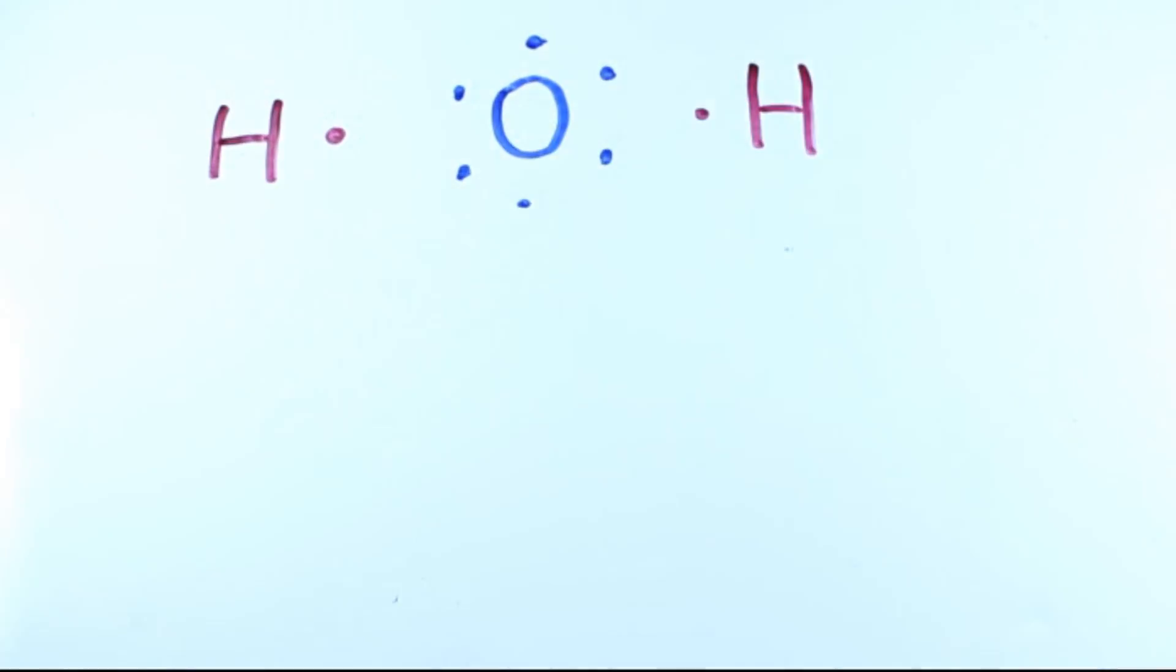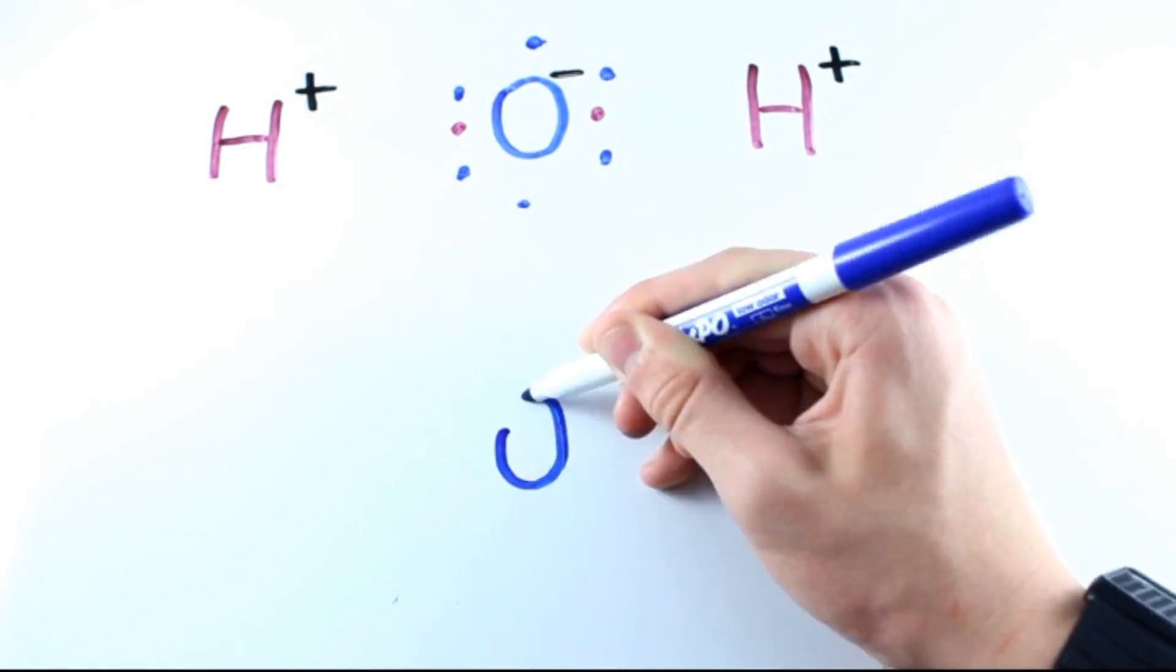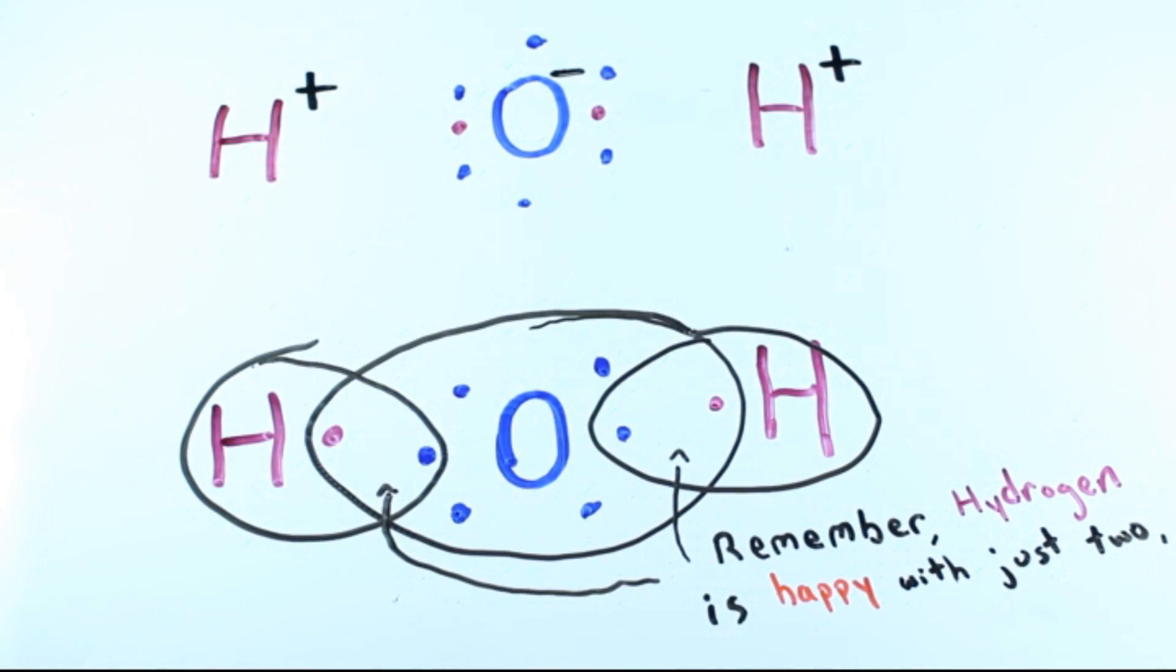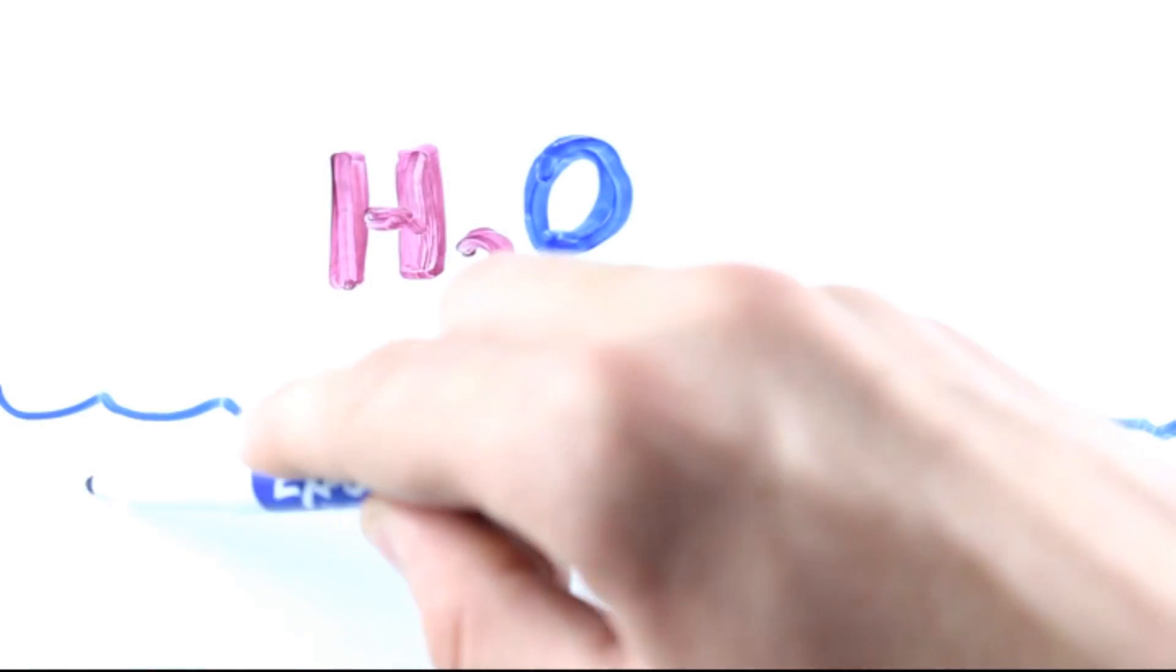Oxygen can steal from two hydrogen to get eight, negatively charging the oxygen and positively charging the hydrogens, or oxygen and hydrogen can share. Both of these results in H2O, otherwise known as water.